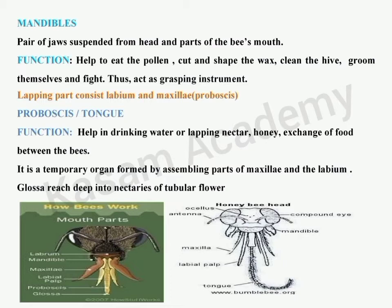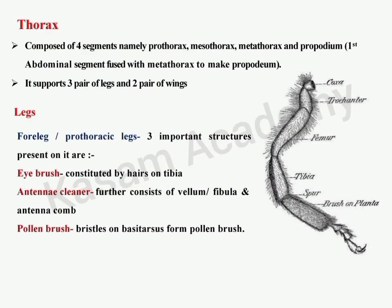The mandibles also clean the hive, groom the bee, and fight against predators — mainly acting as a grasping instrument. The lapping part consists of the labium and maxilla forming the proboscis or tongue. Their main functions are drinking water, lapping nectar, and exchanging food between the forager bee and the nursing bee. It is a temporary organ formed by assembling the maxilla and labium. The glossa is the part at the tip of the proboscis, which reaches deep into the nectar of tubular flowers.